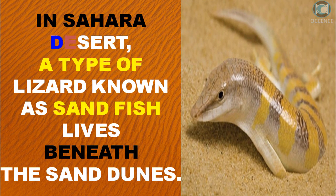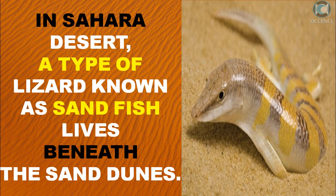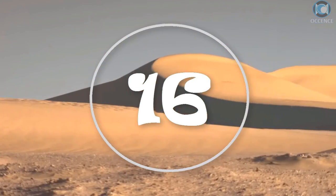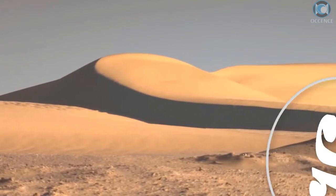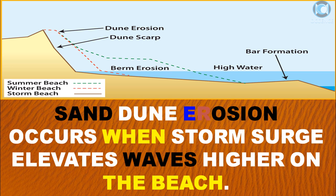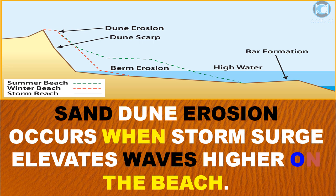In the Sahara Desert, a type of lizard known as sand fish lives beneath the sand dunes. Sand dune erosion occurs when storm surge elevates waves higher on the beach.